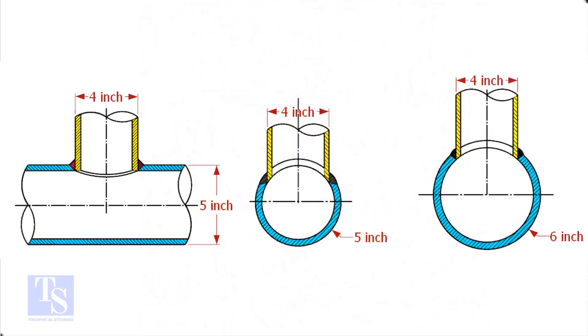In the case of stub-in connections, the branch pipe size is one or more units less than the header size. Suppose both the header and the branch size are the same, a stub-in connection is not possible.